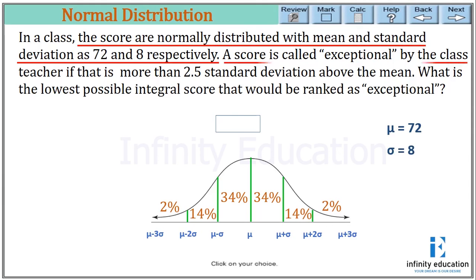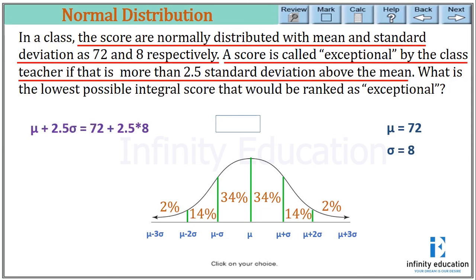We need to find 2.5 standard deviations above the mean: mu plus 2.5 sigma = 72 plus 2.5 times 8 = 72 plus 20 = 92. However, the score must be more than 2.5 standard deviations above the mean, so it must be more than 92. Therefore, the lowest possible integral score that would be ranked as exceptional is 93.